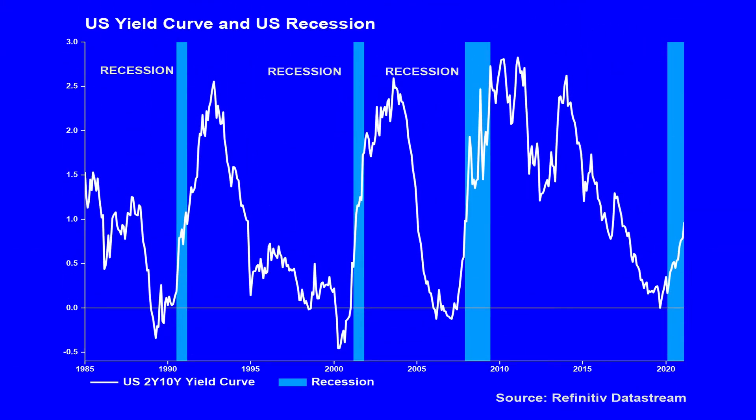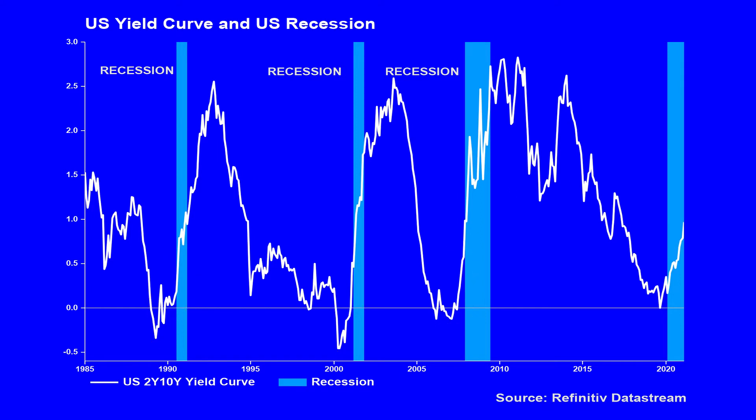We can see that in advance of the Covid recession, the yield curve inverted, albeit briefly, and then started to re-steepen just like it had on the previous three occasions. However, this obscures a very different dynamic that's been in play over the last 18 months compared to before, and this is contributing to the confusion about the outlook for the US economy.